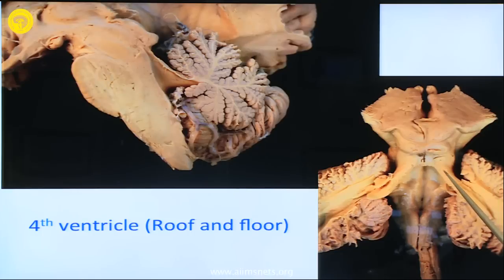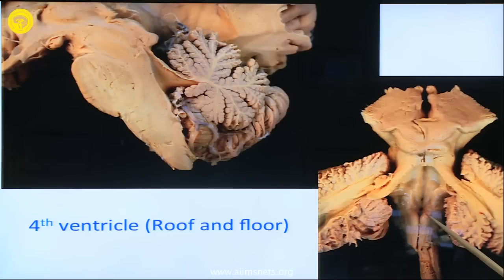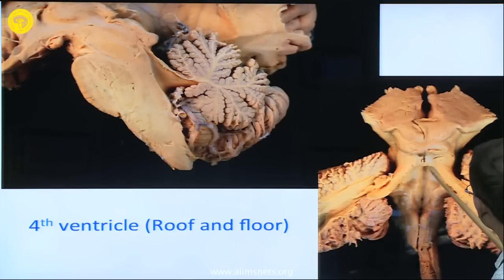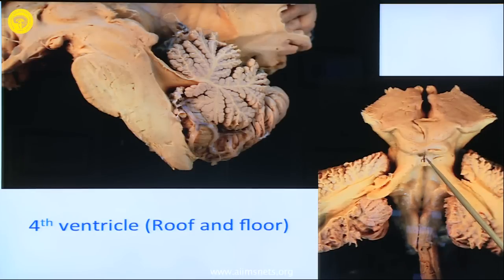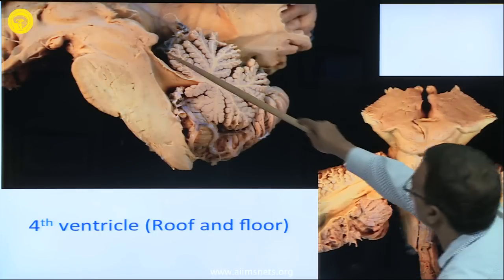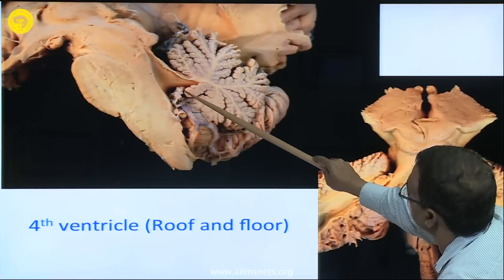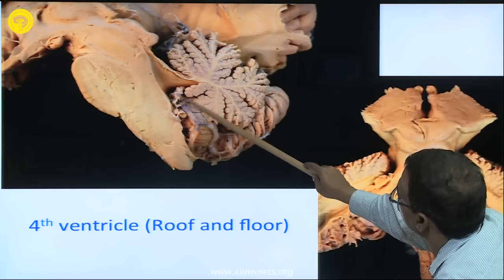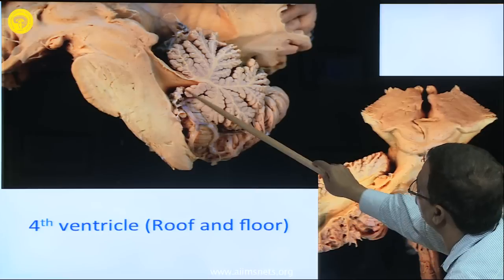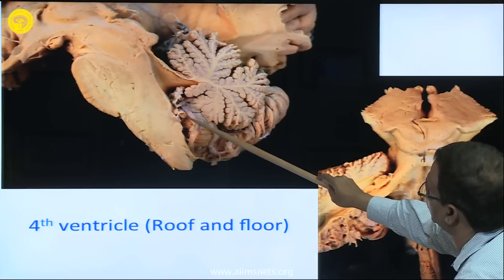The boundaries superolaterally are the superior cerebellar peduncle, the inferior cerebellar peduncle, and below is the gracile tubercle and cuneate tubercle — these form the boundary of the fourth ventricle. The floor of the fourth ventricle: this is the median sulcus; here is the roof and there is a discontinuity at the inferior medullary velum — that is the choroid plexus of the fourth ventricle, which is a branch of the PICA. You can see some branches of the PICA which enter through the foramen of Magendie into the fourth ventricle.